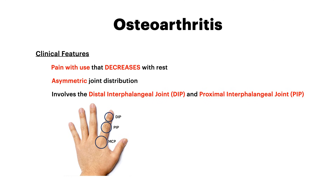This slide is extremely high yield because we're going to compare and contrast these features of osteoarthritis with rheumatoid arthritis. Pain in osteoarthritis is usually with use and decreases with rest — the pain happens when you're doing something and gets better when you stop. That makes sense because osteoarthritis is really a disease of mechanical force and subsequent inflammation. The less mechanical force on a joint, the better the pain feels.